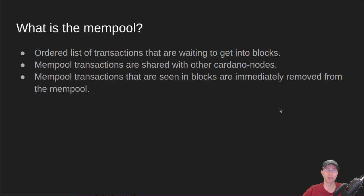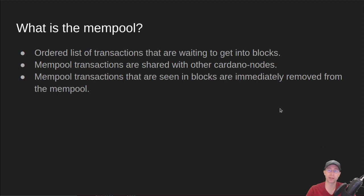What is it? It is an ordered list — first in, first out — of transactions that are waiting to get into blocks. So if you are using a Daedalus client, you have your own mempool. When you create a transaction, it goes into your local Cardano node's mempool, and then that mempool talks to other Cardano nodes through a different mini protocol called the Transaction Submit mini protocol, and that gets propagated to other nodes on outgoing connections. So it works for a Daedalus client that's behind a firewall — it doesn't need any incoming connections to propagate transactions. Those transactions get shared out with other Cardano nodes whenever there's room in somebody else's mempool.